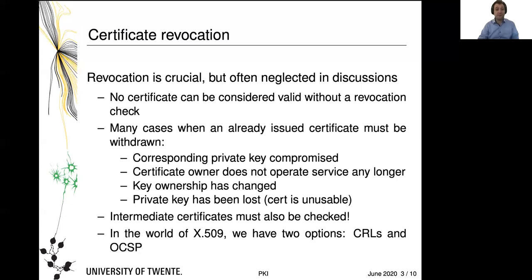It doesn't stop there. It's not enough to just check the end entity certificate. You also need to check that the intermediate certificates are valid at the time that you're interested in. In the world of X.509, generally we say we have two options: certificate revocation lists and OCSP, and these come in various flavors, at least in the case of CRLs.